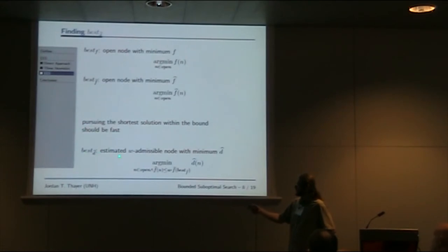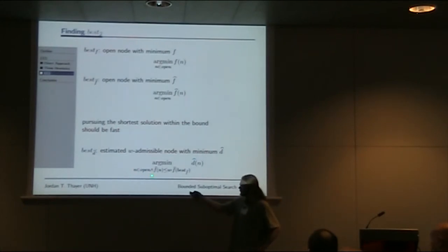Best F-hat allows us to define best D-hat, which is what we wanted. Best D-hat is the estimated W-admissible node with minimum D-hat. It's open, so we've generated but not yet expanded it. The estimated cost, F-hat of that node, is within some bounded factor W of our best estimate of optimal solution cost, F-hat of best F-hat. Of all these nodes that appear within the bound, it's the one that looks closest to the goal.